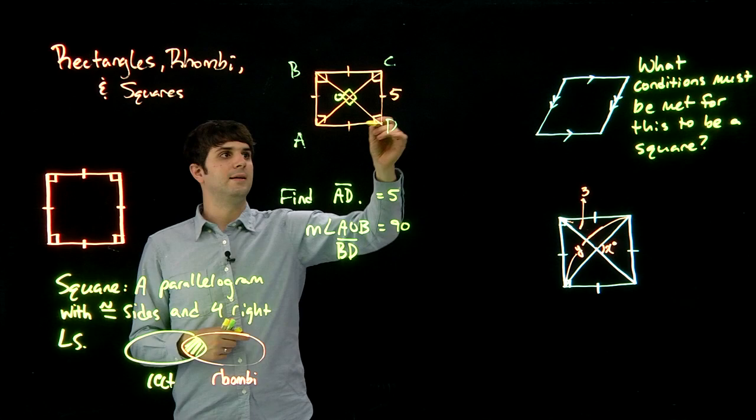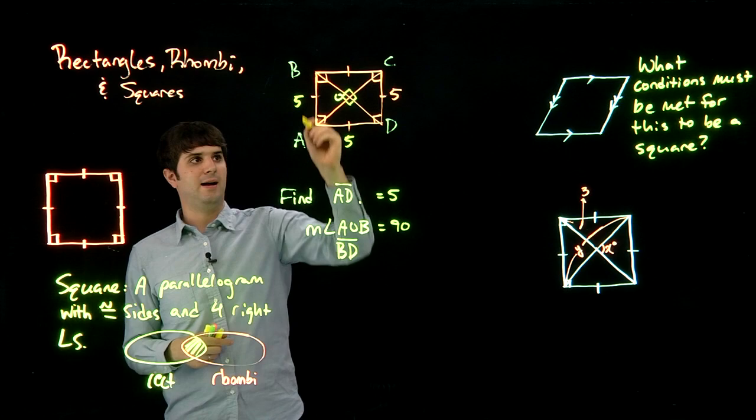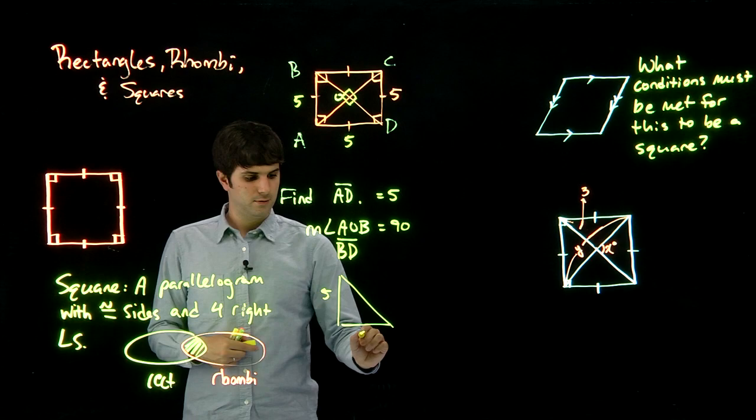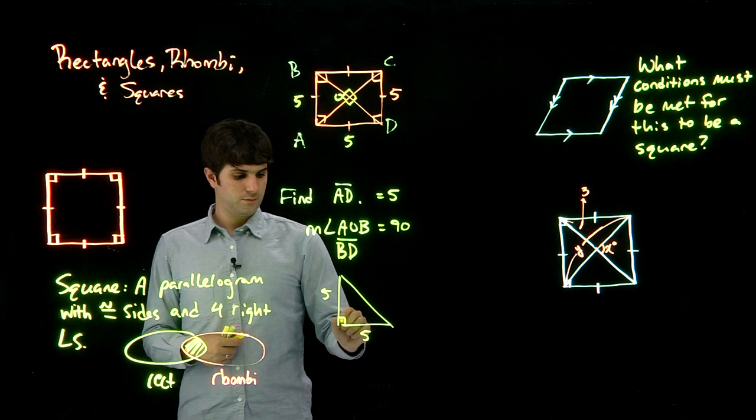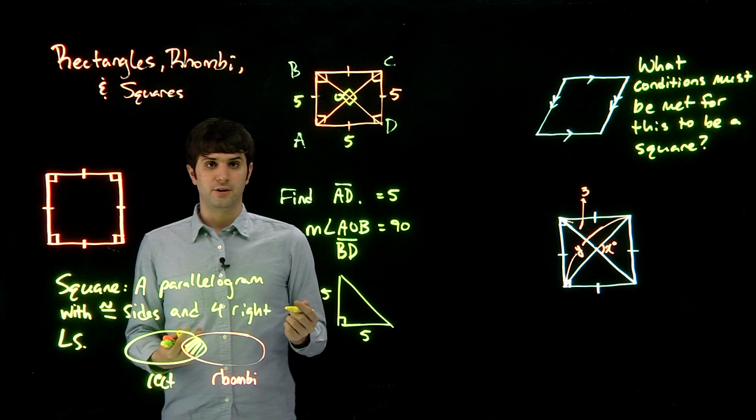Finally, what is BD? Well we know that AD is 5, we know that BA is 5, so we have a triangle that looks like this, 5, 5, alright, so we have that as our set up.